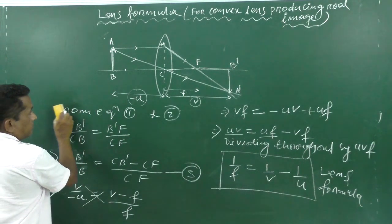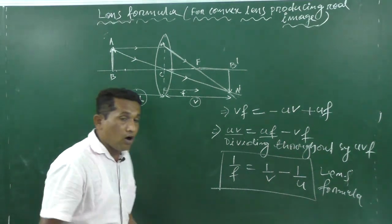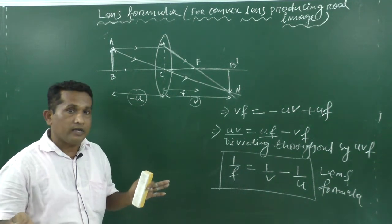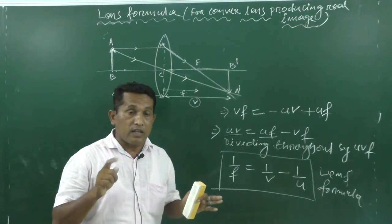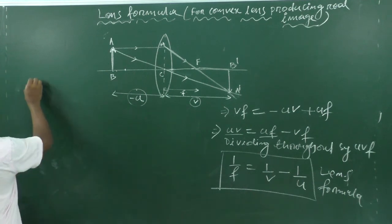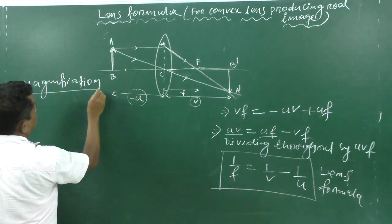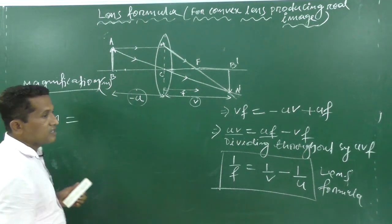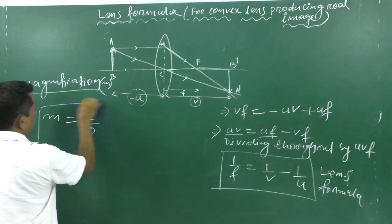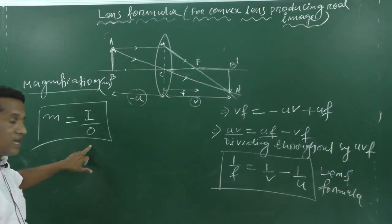Now let us come to magnification. Magnification means whether the image is enlarged or diminished. If the image is enlarged, magnification is more than 1. If the image is diminished, magnification is less than 1. If the image size equals the object size, magnification is 1. Magnification m is defined as the ratio of the size of the image to the size of the object: m = I / O.